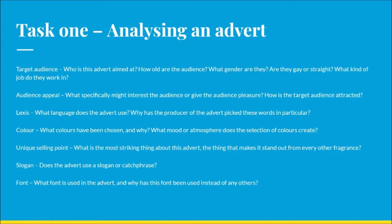Lexis is a new media studies term but all it means is language — what language the advert uses. Why has the producer picked these words in particular? Colour is extremely important for advertising: what colours have been chosen and why? What mood has been created and what atmosphere does the selection of colours create? We also need to consider the unique selling point, or USP. You can't just say here's a perfume, it smells nice — you need to market it and say this is different from everything else. So what is the most striking and unique thing about this advert? The slogan is also really important: does the advert use a slogan or catchphrase, and if so what does it say about the product? Does it tell you anything more about audience appeal and who this advert is targeting specifically?